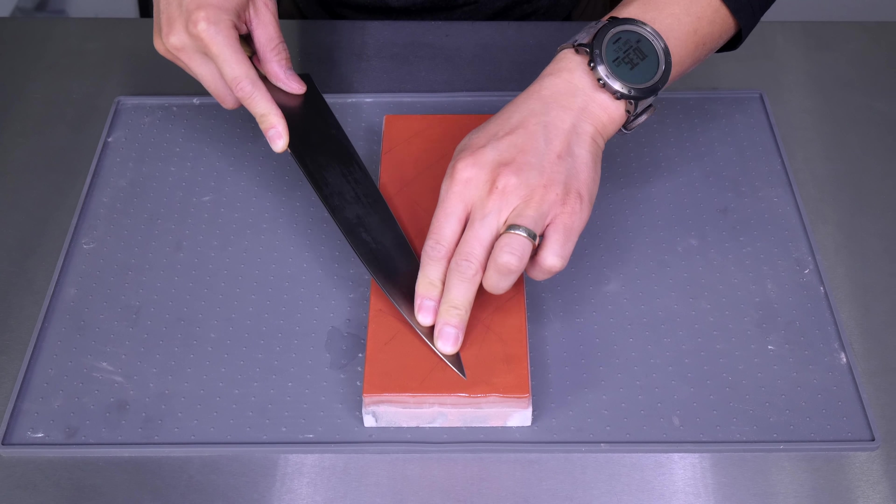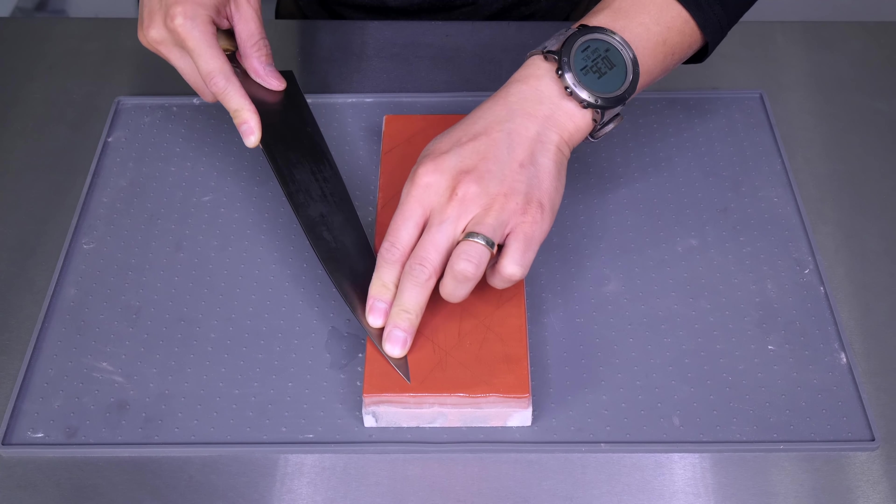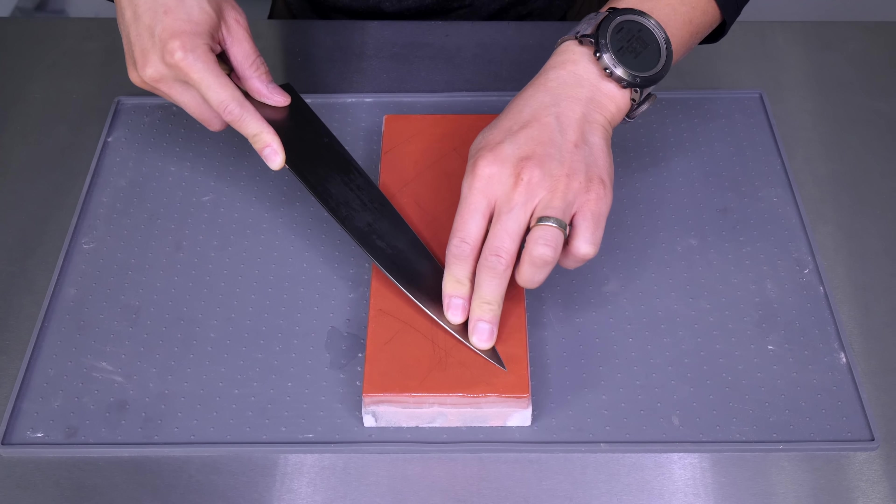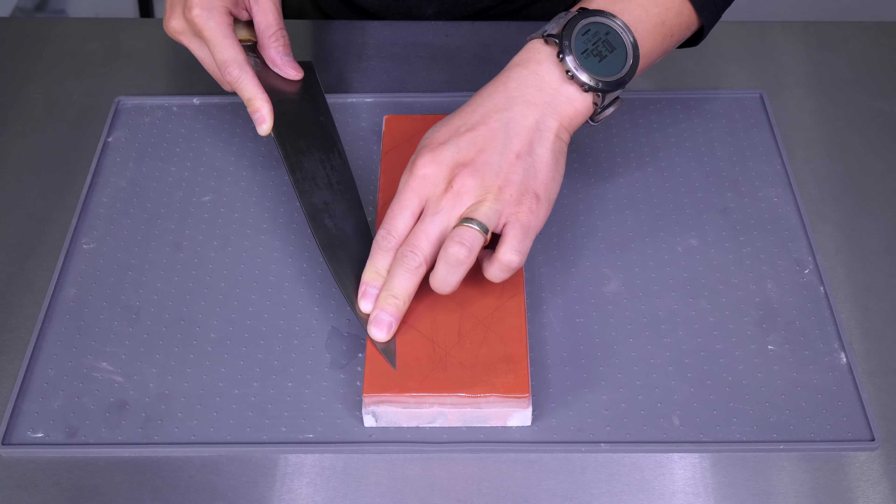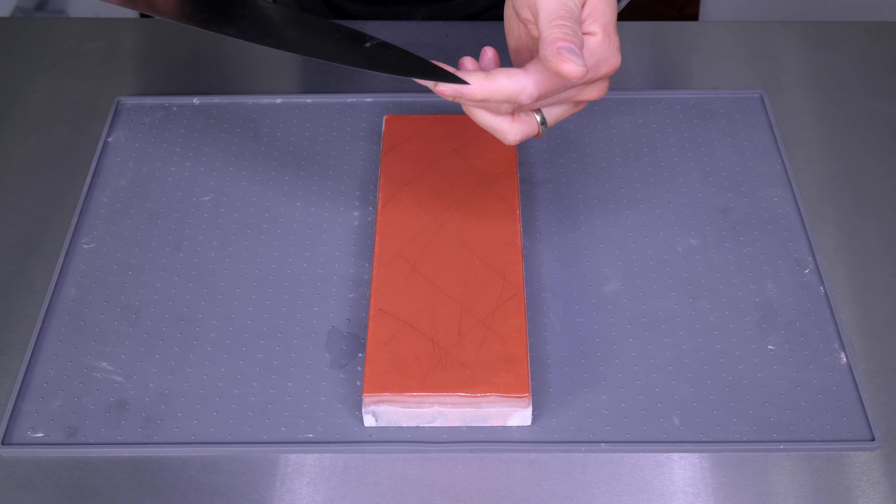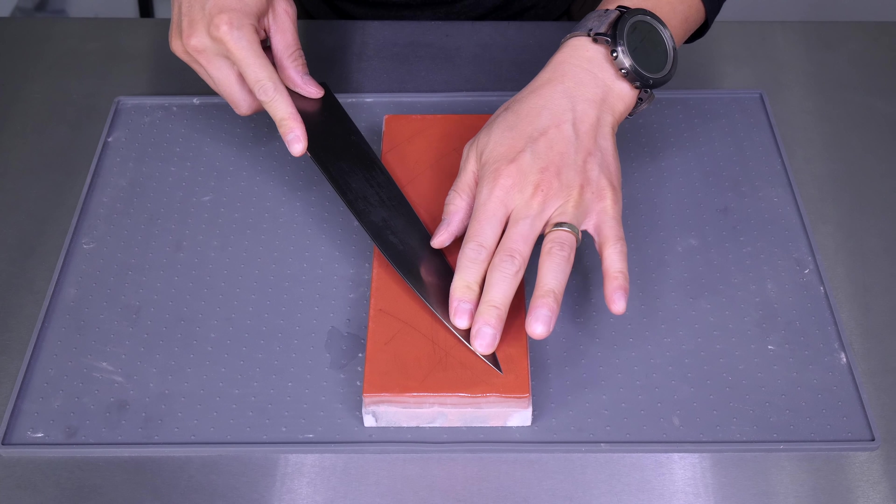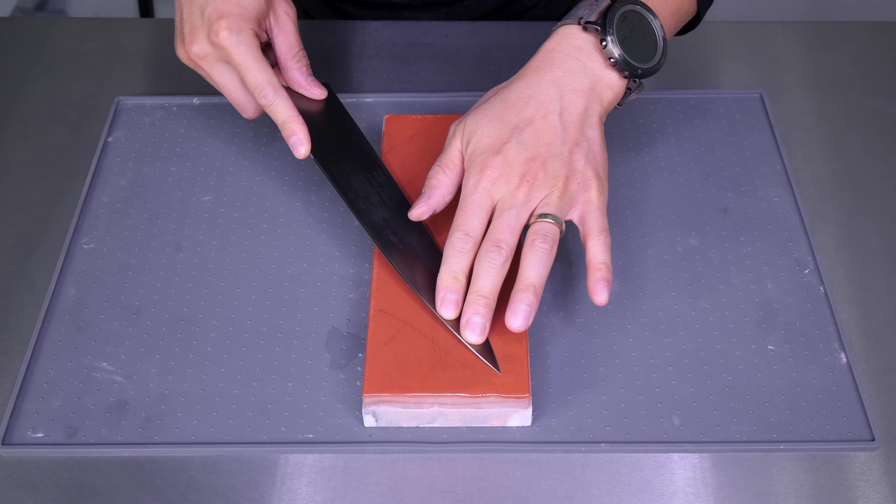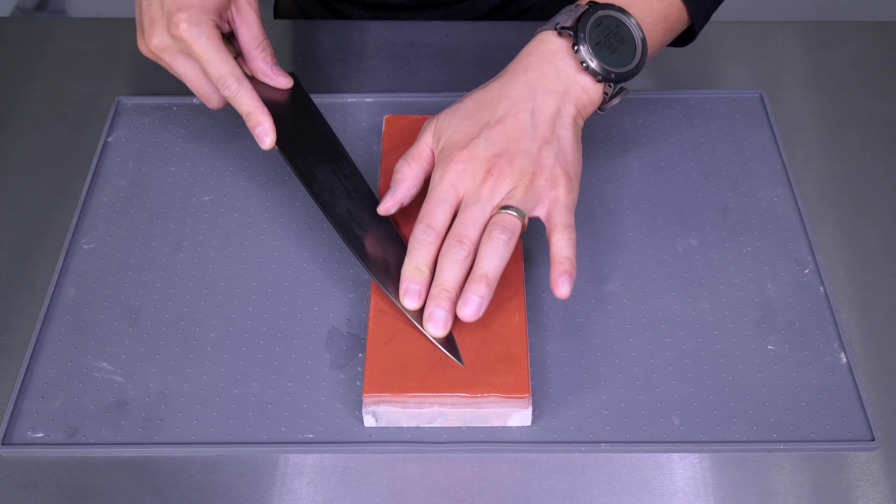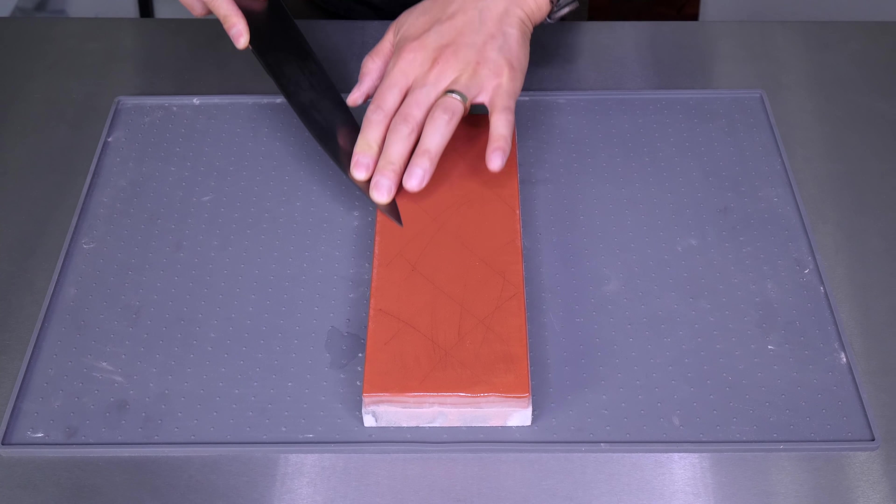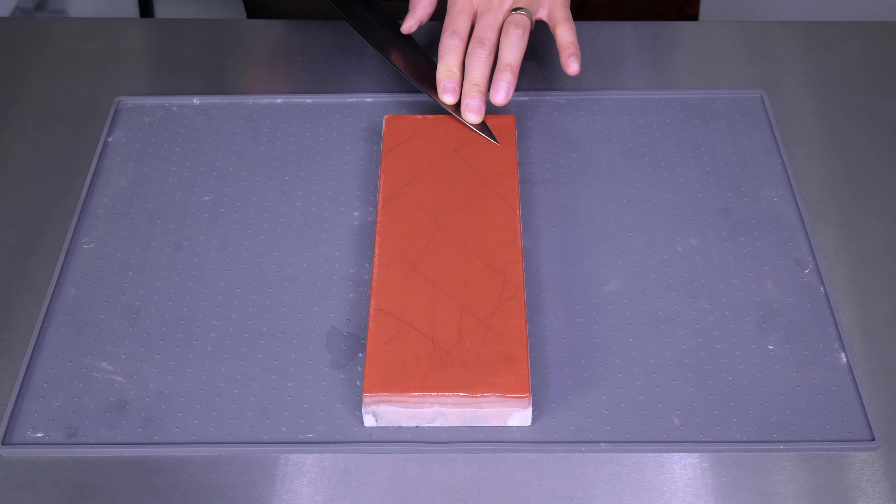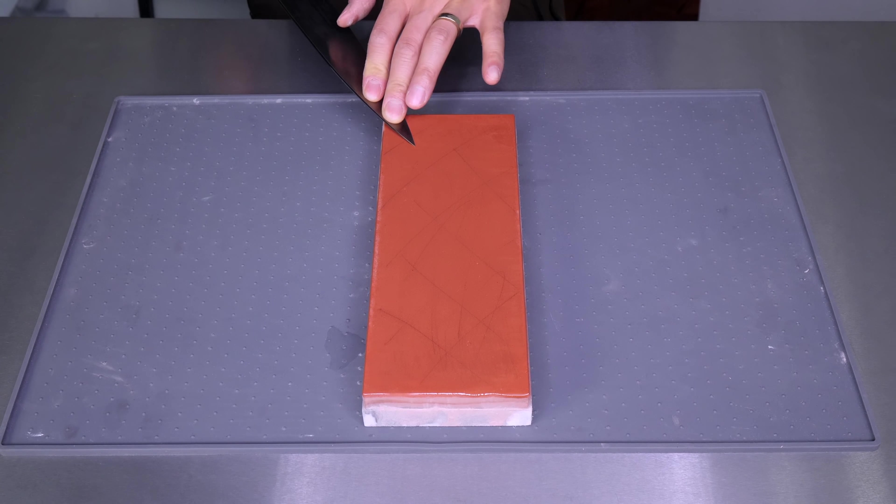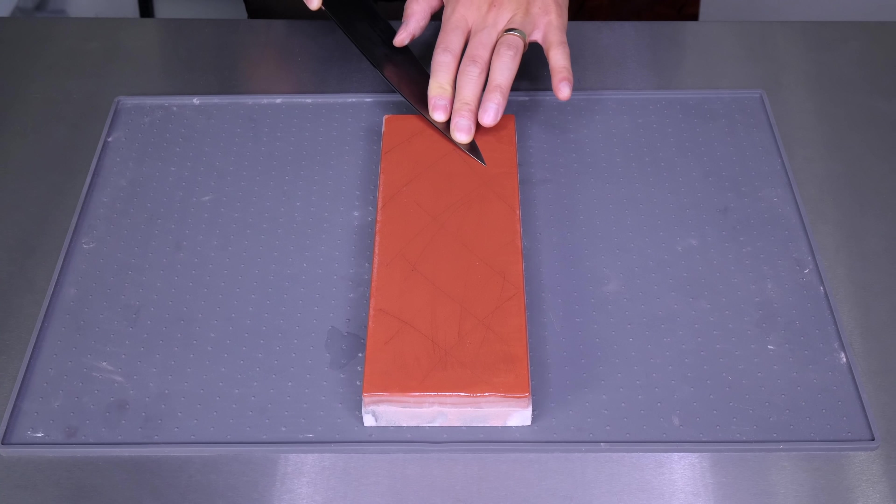The first thing you can do when sharpening the tip of the knife is make sure you use the areas around the corners and edges of the stone. This achieves two things. First, it allows you to apply wear to areas of the stone that are normally neglected in regular sharpening. Most people will only use the very center of the stone. So by using the top and bottom areas during tip sharpening, you allow the stone to stay flatter longer. And second, this teaches you to take shorter strokes, which leads us to the second tip.